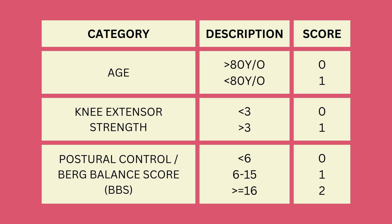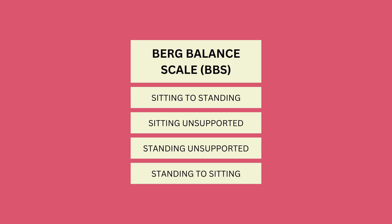For postural control, we look at the Berg Balance Scale, simply known as BBS. We will only look at the first 4 components, because the total score required for the BBS in this algorithm is up to 16. If you can perform these 4 items independently and safely, it is automatically a score of 16. However, if you have some difficulty in any one of these, the score will be less than 16.